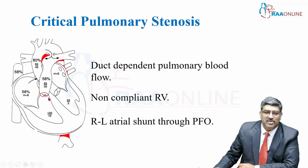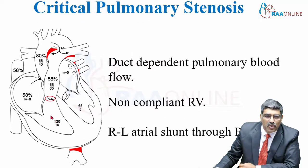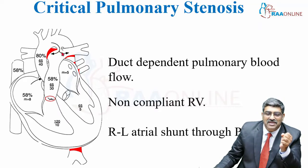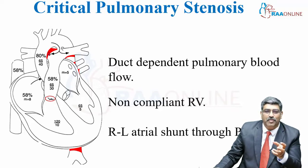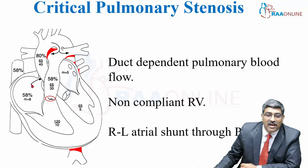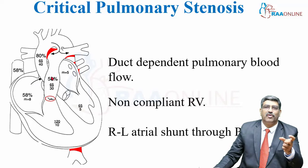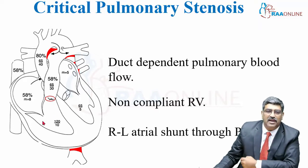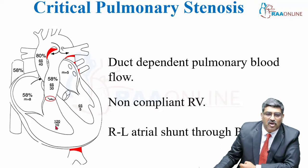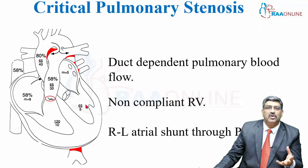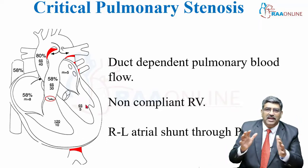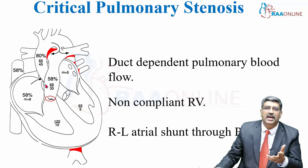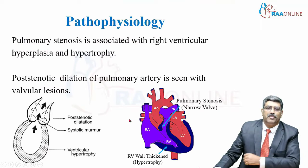In critical pulmonary stenosis, the pulmonary orifice is so narrow that virtually no blood goes into the pulmonary artery. The ductus arteriosus opens up, and pulmonary blood flow becomes dependent on a patent ductus arteriosus. There will also be a right-to-left shunt through the PFO. Both the PFO and ductus open up in critical pulmonary stenosis. The RV pressure can be around 120 mmHg compared to LV at 65 mmHg, resulting in a non-compliant RV. There will not be enough pulmonary blood flow, and oxygen saturation will be very low — as low as 58%.